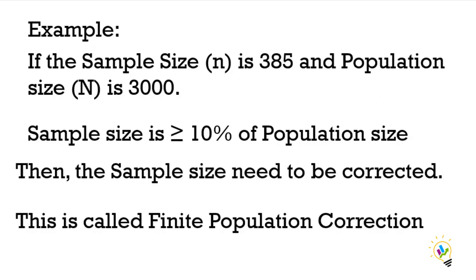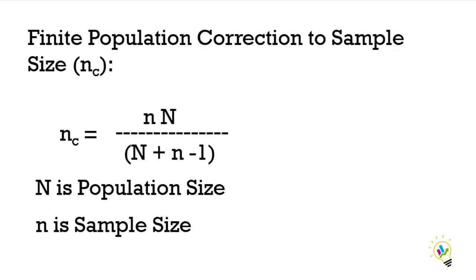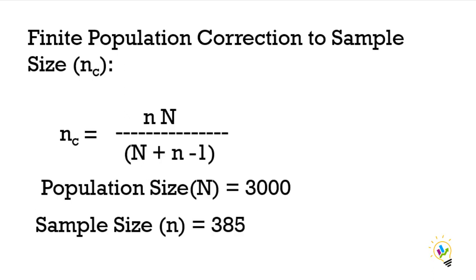In the previous video we calculated sample size as 385. Now, if the population size is 3000, the sample size is greater than or equal to 10 percent of the population size, so the sample size needs to be corrected. This correction is called finite population correction. The formula is: nc = n times N divided by (N + n - 1), where N is population size and n is sample size.